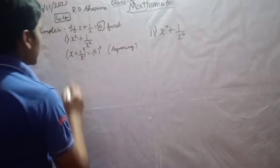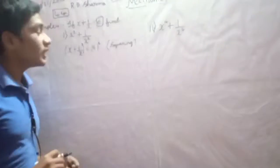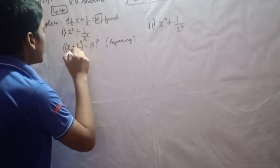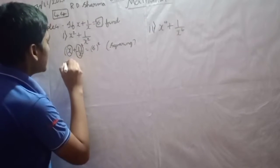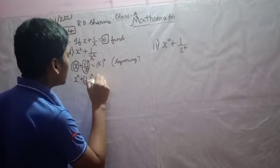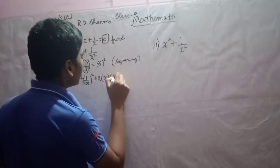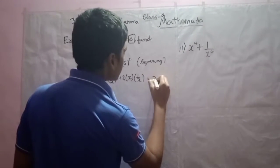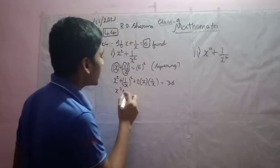The next step is x plus 1 by x, whole squared. Do you remember the identity which says a plus b whole squared equals a squared plus b squared plus 2ab? Similarly, here the value of a is x and the value of b is 1 by x. So x plus 1 by x whole squared is x squared plus 1 by x whole squared plus 2 times x times 1 by x.